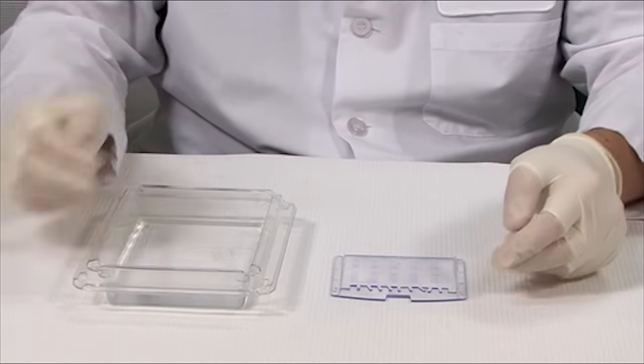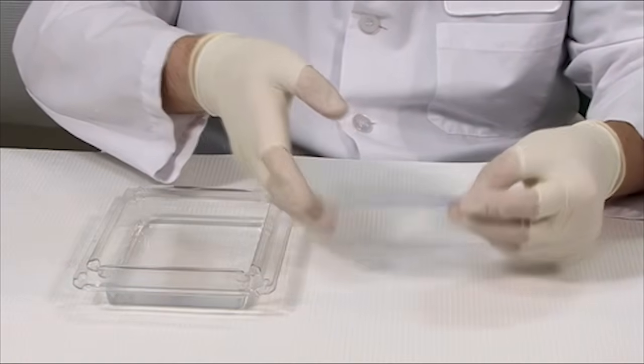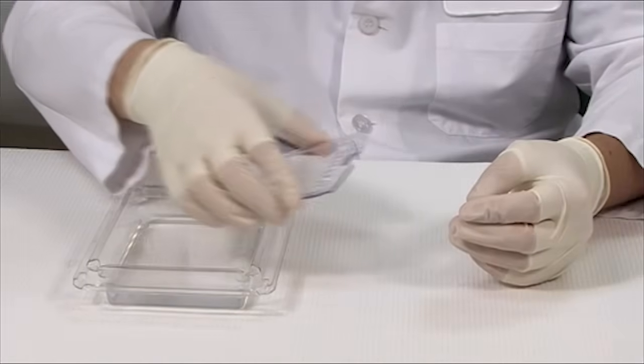One way to remove the gel from the plate is to invert the plate over a buffer filled tray and the gel should peel from the plate into the buffer.